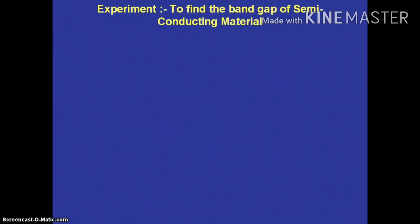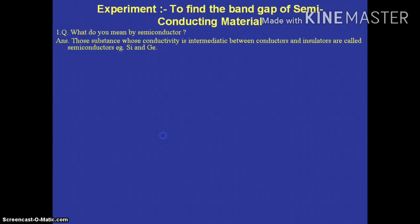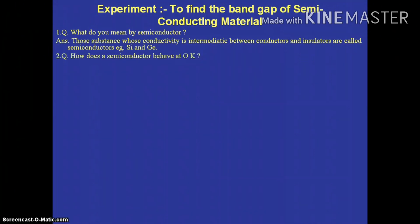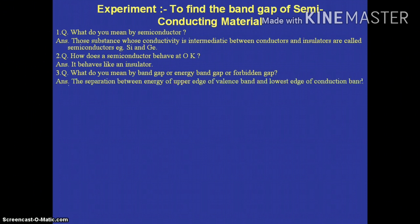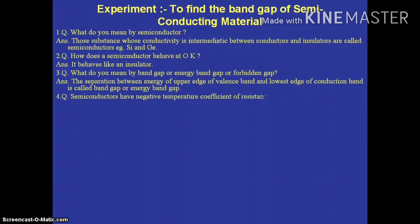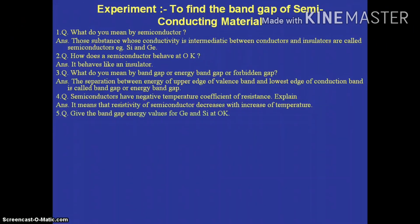The next experiment is to find the energy band gap of a semiconductor material. First question: what do you mean by a semiconductor? Those substances whose conductivity is intermediate between conductors and insulators are called semiconductors — for example, silicon and germanium. Second question: how does a semiconductor behave at zero degrees Kelvin? It behaves like an insulator. Third question: what do you mean by band gap or energy band gap? The separation between the upper edge of the valence band and the lower edge of the conduction band is called the band gap.